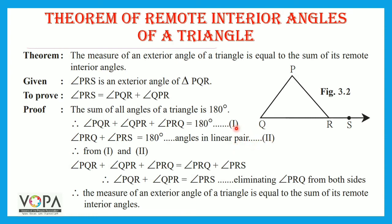Now if you compare statement number 1 and statement number 2, it is clear that the right-hand side of both statements is 180 degrees. That means the right-hand sides are equal. Therefore, from 1 and 2, angle PQR plus angle QPR plus angle PRQ equals angle PRQ plus angle PRS.